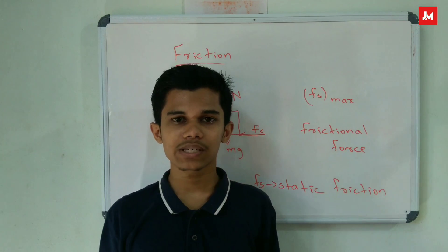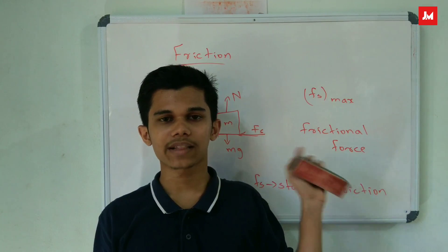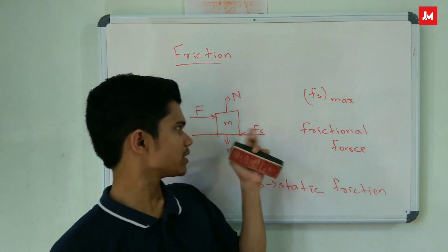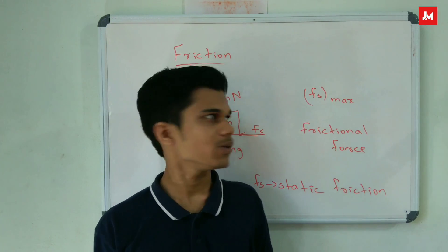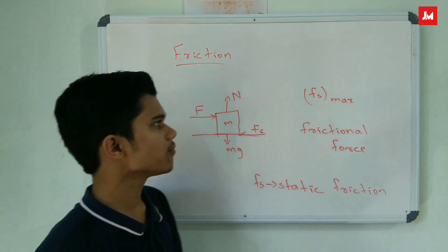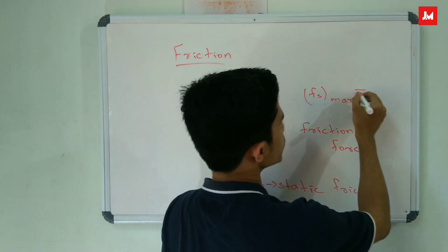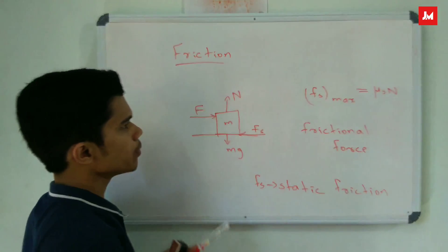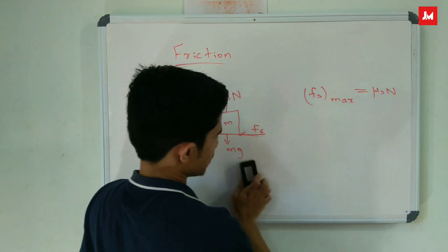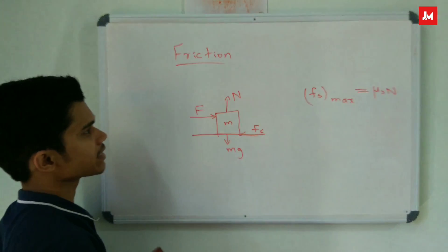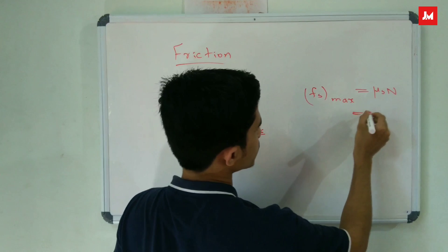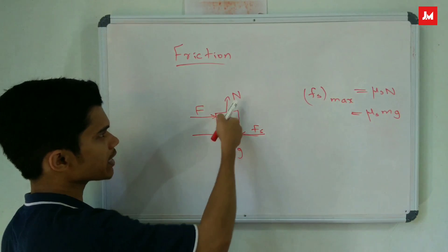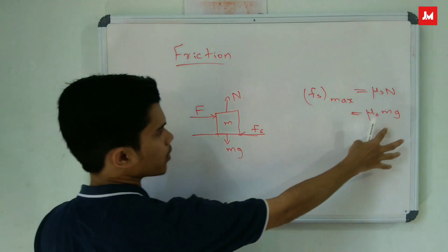If we apply the force, we move the object — that's the friction force. There is a limit. That maximum value is Fs maximum. Fs maximum is equal to μs into N. N is equal to mg. So Fs maximum equals μs into mg.